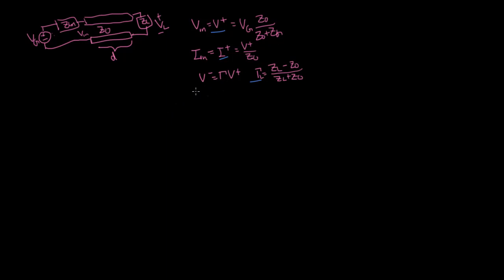If we want to find the voltage at the load, it's going to be equal to 1 plus Gamma times V plus. The positive wave gets dissipated, the load voltage gets dissipated across the load, and you have a reflective wave going back. The reflected current is equal to V minus divided by Z naught, but don't forget to add a negative sign when relating voltage and current if it's going in the negative Z direction.